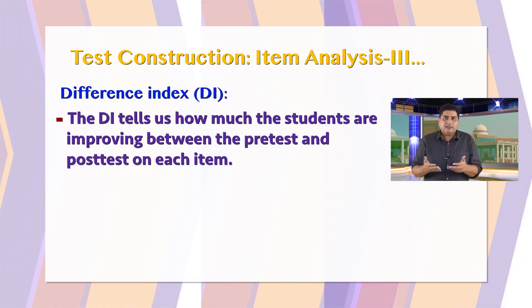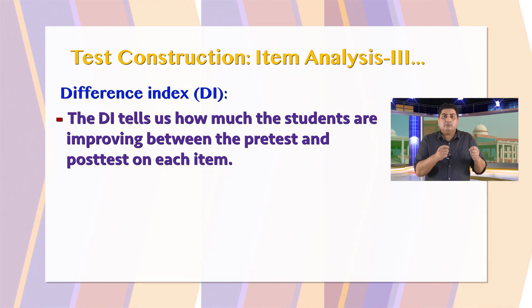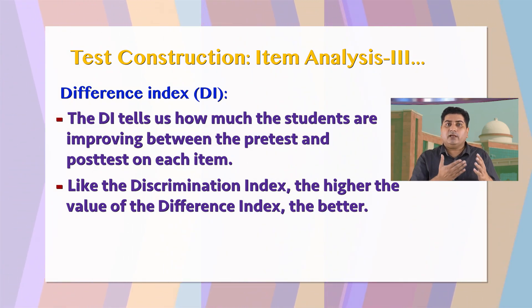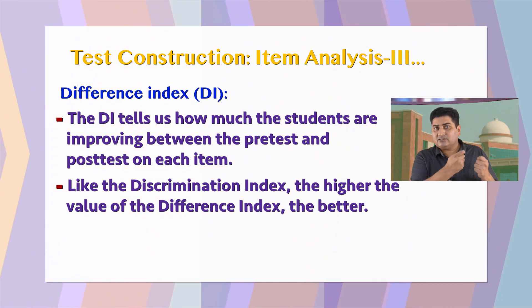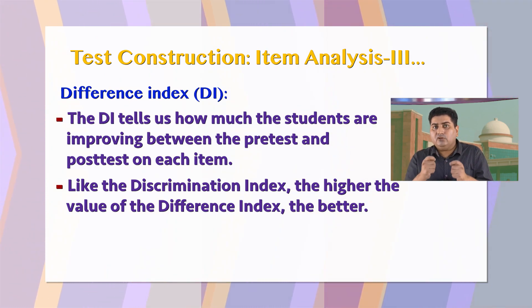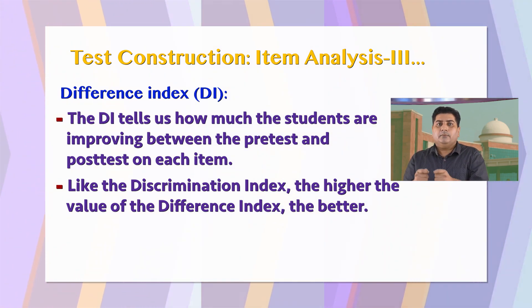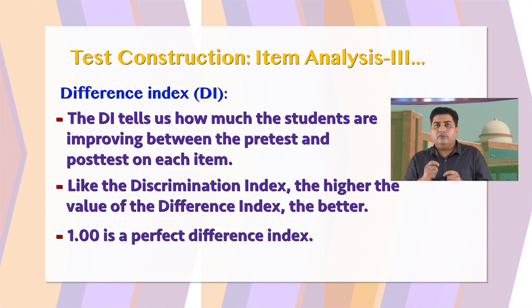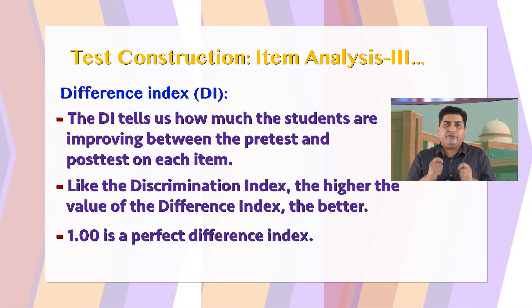By extension, we can say the DI reflects performance on the related curriculum objective. Like the item discrimination statistics used as discrimination index in the first achievement test, the higher the value of the DI, the better the question. A value of 1 is a perfect difference index. Items with a lower or negative difference index are not considered good items.